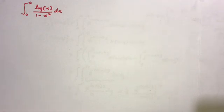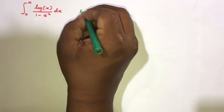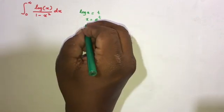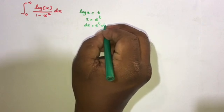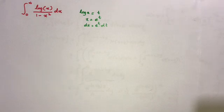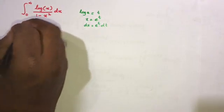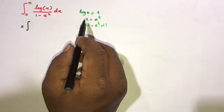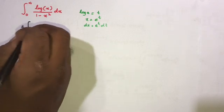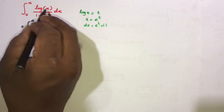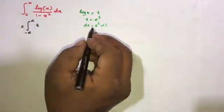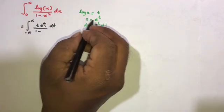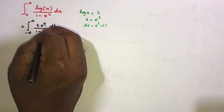First, I am going to take a substitution. If we take natural log of x equal to t, then x equals e to the t, and differentiating gives dx equal to e to the t dt. Substituting, the lower limit: when x approaches 0, t approaches minus infinity. So the integral becomes from minus infinity to infinity of t times e to the t dt over 1 minus e to the 2t.